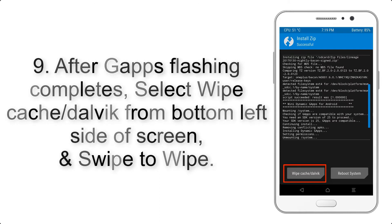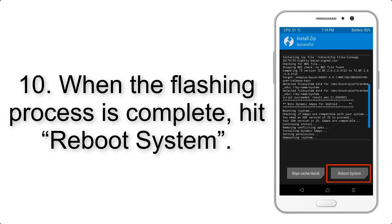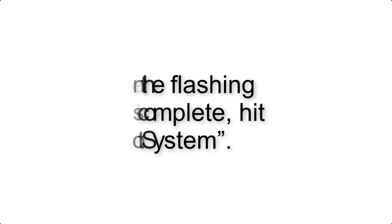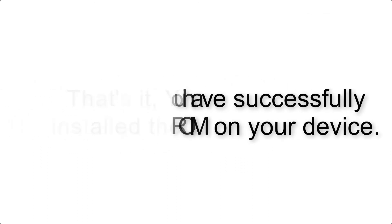Step 9: After GApps flashing completes, select Wipe Cache and Dalvik from the bottom left side of the screen and swipe to wipe. Step 10: When the flashing process is complete, hit Reboot System. That's it — you have successfully installed the ROM on your device.